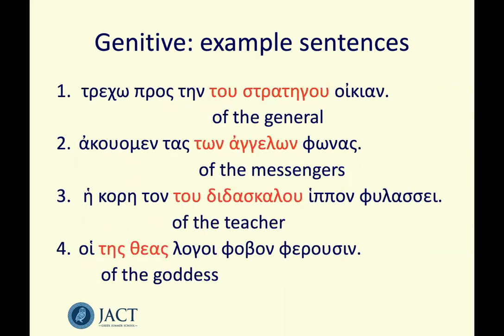Here in red are the genitive words in each of the four sentences. Number one: 'trekō pros tēn oikian' — and then it's 'tēn tou stratēgou oikian'. I run towards the house of the general. Note the general is there in the middle of the sandwich: 'tēn tou stratēgou oikian'. Number two: 'akouomen tas phōnas' — we hear the voices — and our genitive is 'tōn angelōn'. We hear the voices of the messengers. 'Tas tōn angelōn phōnas' — again our genitive sandwich.